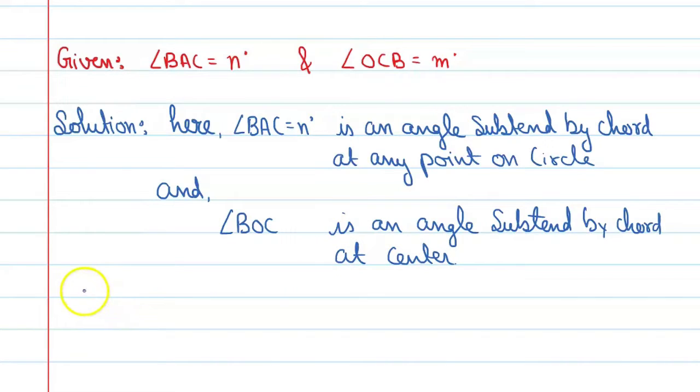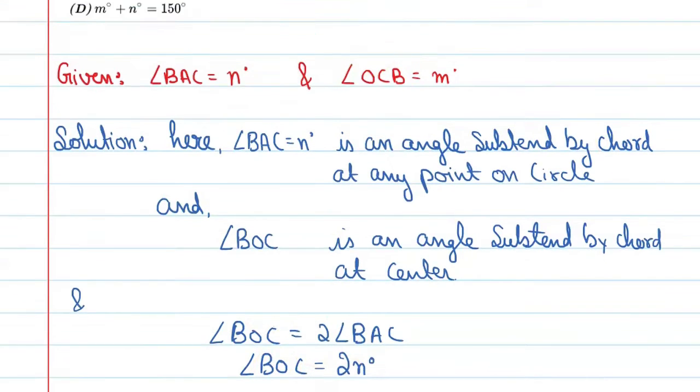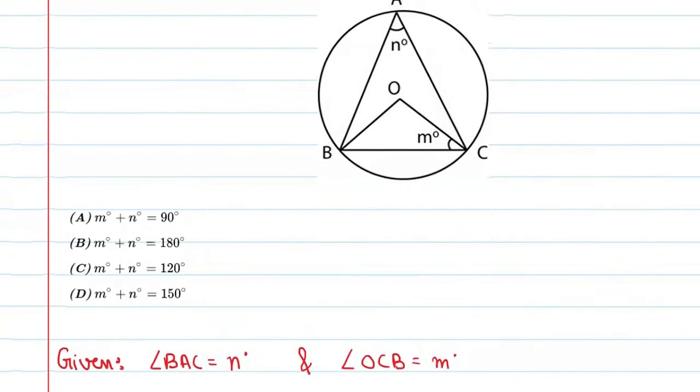So we know that the center angle is going to be equal to twice the inscribed angle. Now we have to find this angle value. This is an angle at any point on the circle, and this is a center angle.